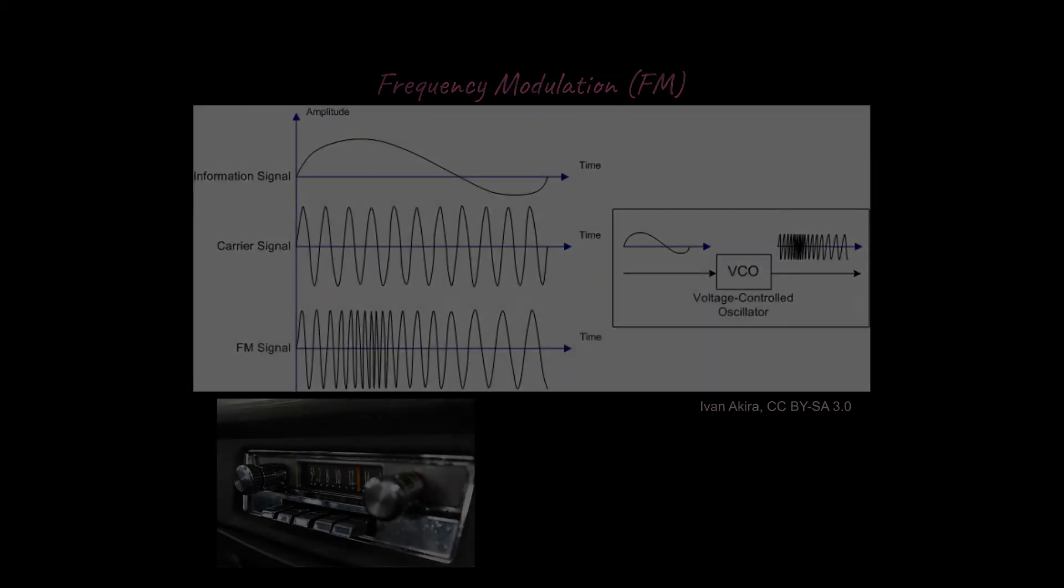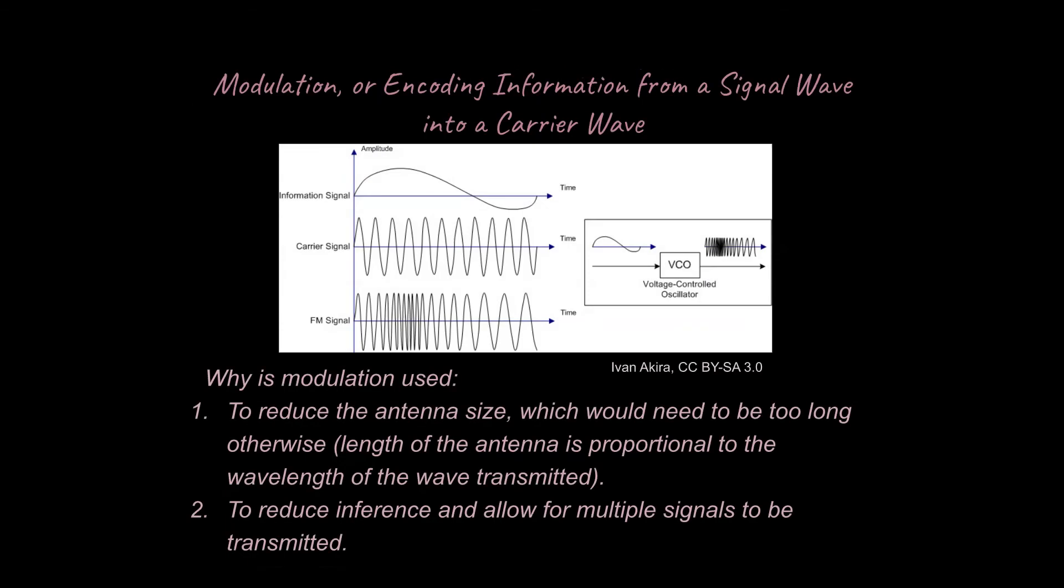All right, well that is what modulation is for a basic introduction with those two different types. You could ask the question, why is modulation used? So one reason I've already mentioned is because the antenna size is going to be much less for something like an FM signal than it would be for something like an audio signal. Like it just becomes impractical. You couldn't have a radio tower that would be almost miles high. That doesn't make sense.